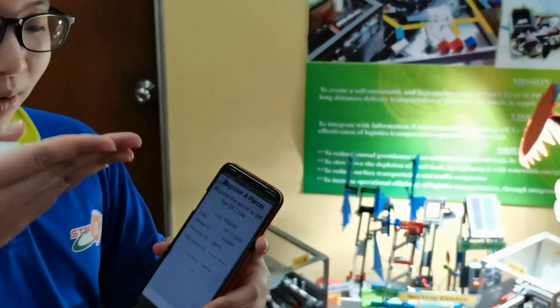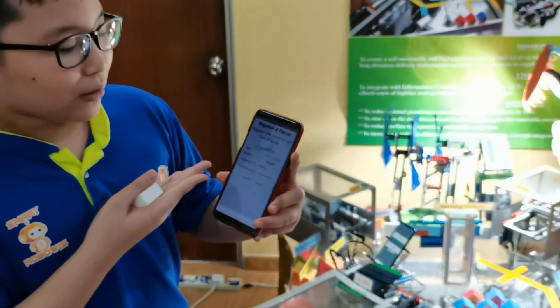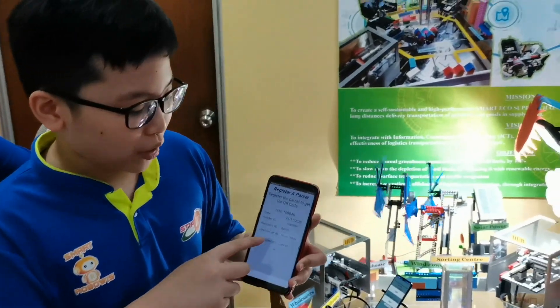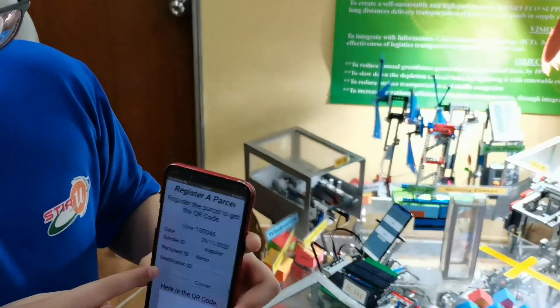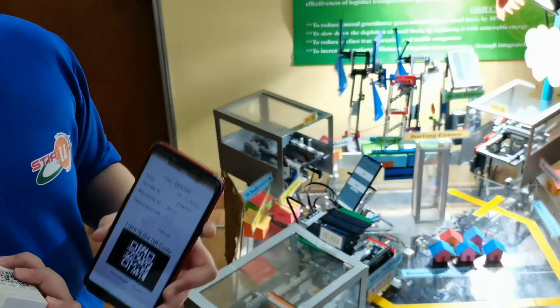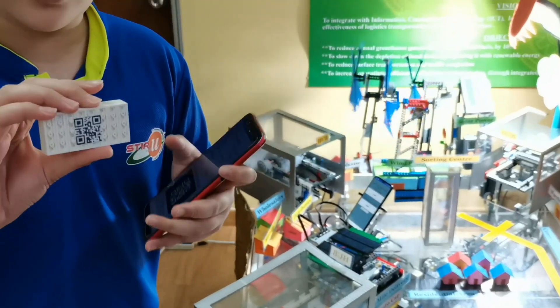First, the supplier will key in details, including the recipient ID and the destination ID. Then they will press confirm and yes. They will then generate a QR code. We can then print out the QR code and place it onto the parcel as an airway bill.